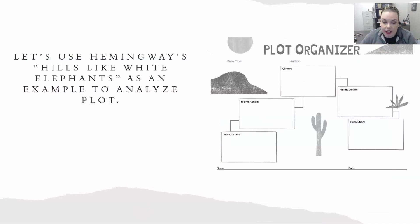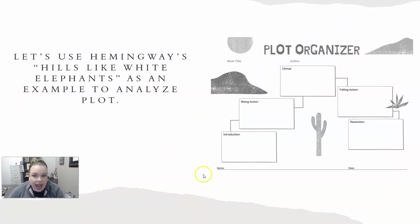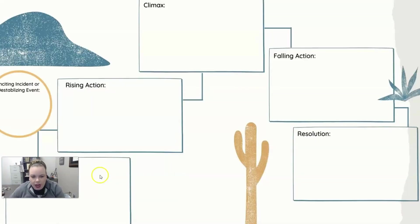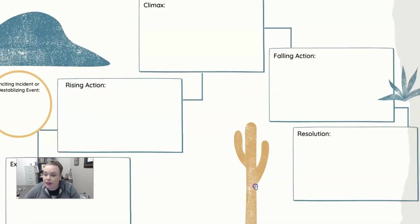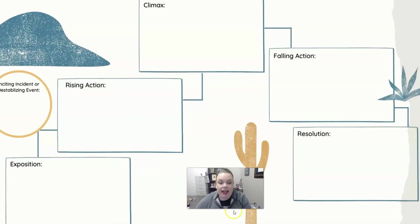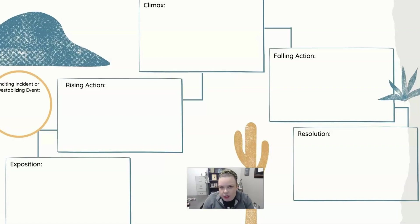I've included a plot organizer available to you on Blackboard, and this can be really helpful in determining the shape of a plot and how things develop. I'm going to use this to analyze Hemingway's 'Hills Like White Elephants' from last week as an example. The first place any story starts — provided it's not in medias res — is with exposition. So look at 'Hills Like White Elephants' and ask: where is the background information given? Where are the characters and setting established? Where is the introduction to the story?